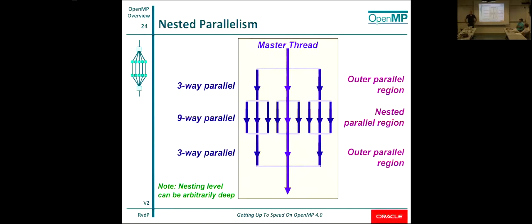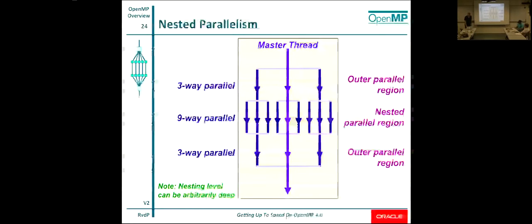Nested parallelism has been in OpenMP from day one, though not really thought through when first added. The idea was to handle recursive algorithms. Inside a parallel region, you can spawn another parallel region and go parallel again. However, the number of threads can explode quickly, so these days you have more control to specify how many threads you want. In many cases where nested parallelism is used, tasking is a better solution — and we'll cover tasking after the break.